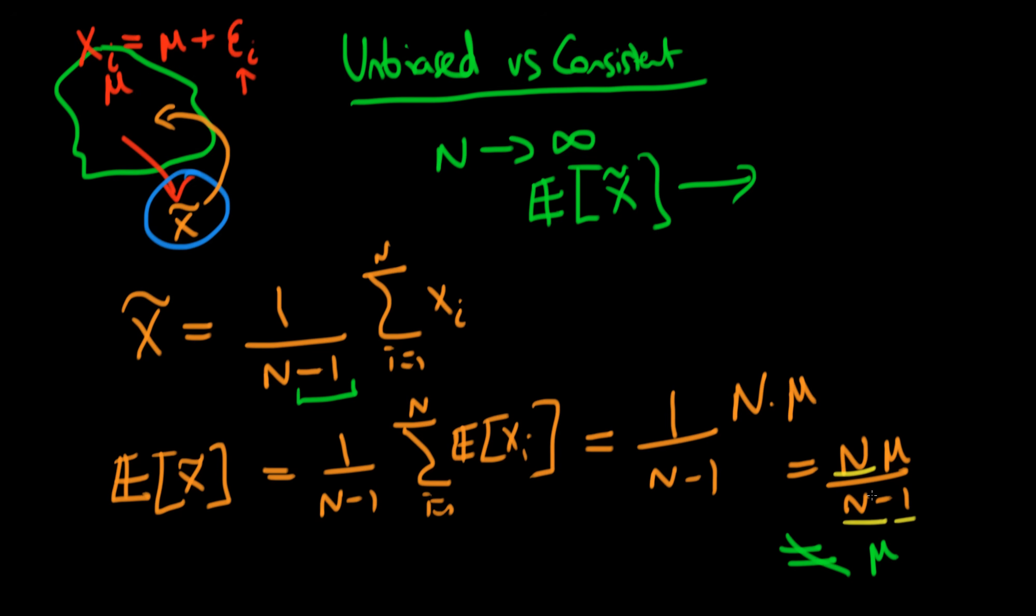Well, if n is a really big number like 10,000, this minus 1 is kind of irrelevant. So in fact I get the n on top cancelling with the n on the bottom and my expected value in the limit that the sample size goes to infinity is in fact the population mean mu.